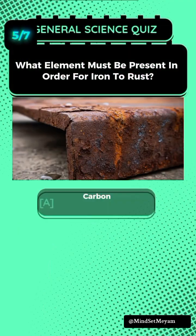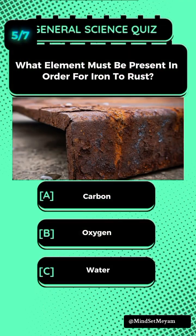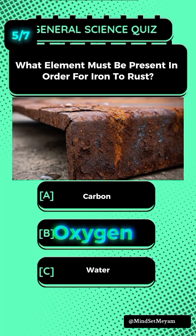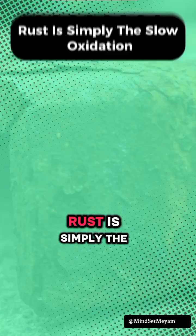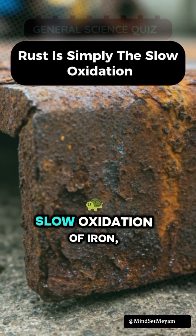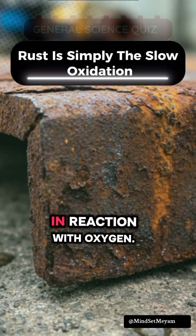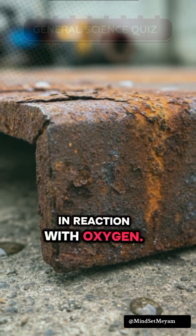Question 5: What element must be present in order for iron to rust? B: Oxygen. Rust is simply the slow oxidation of iron — a reaction with oxygen.